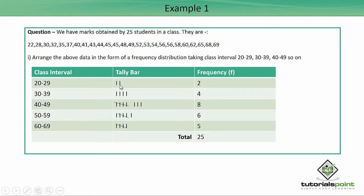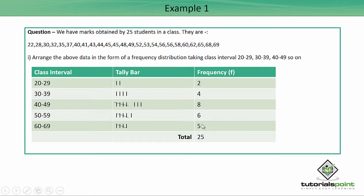Now I write down the frequencies. The 20 to 29 interval has two tally bars, so frequency is 2. The 30 to 39 interval has four, so frequency is 4. The 40 to 49 interval has five plus one plus two plus three, which is 8. The 50 to 59 interval is five plus one, which is 6. The 60 to 69 interval has 5. Totalling: 2 + 4 + 8 + 6 + 5 = 25. If the frequency doesn't total to the number of students, something is wrong — this is the best way to check in an exam.